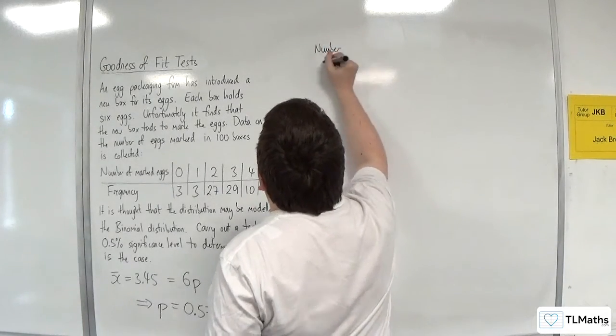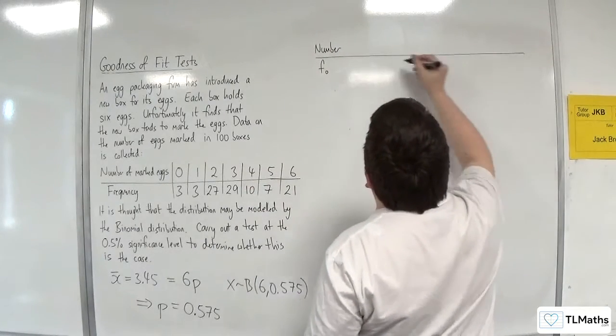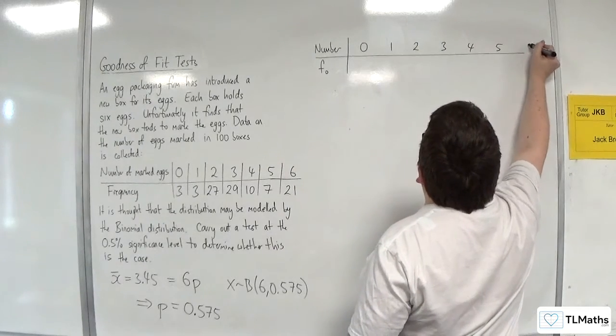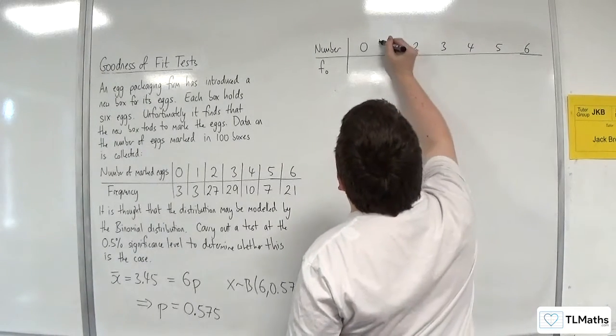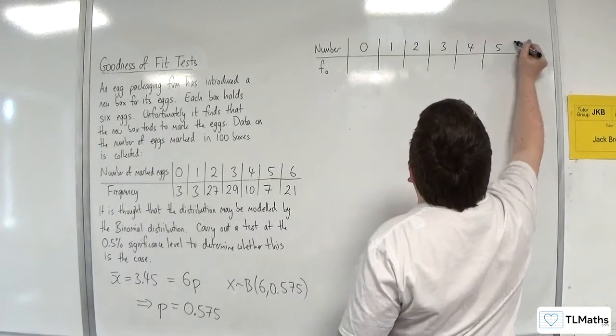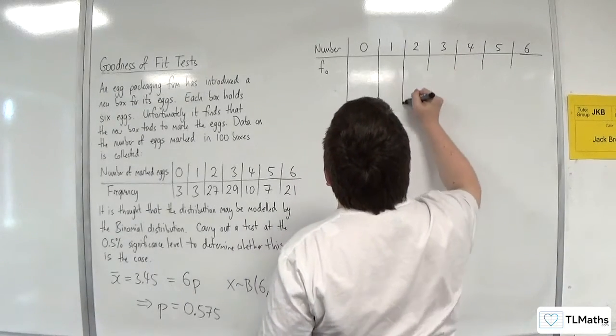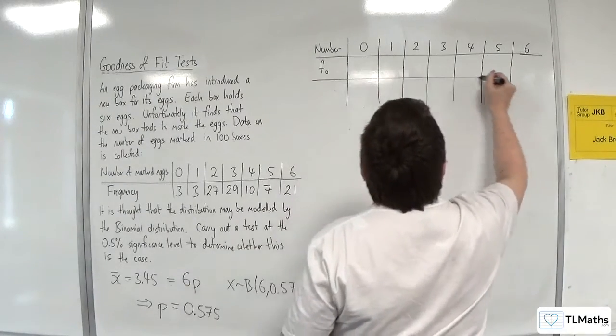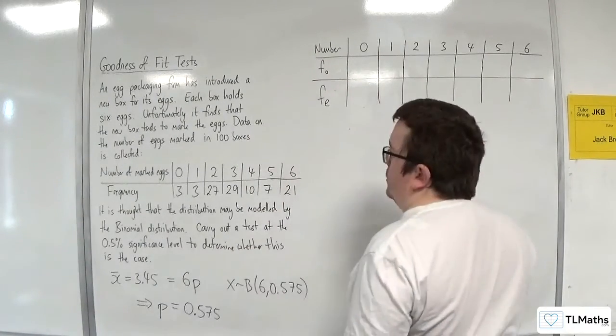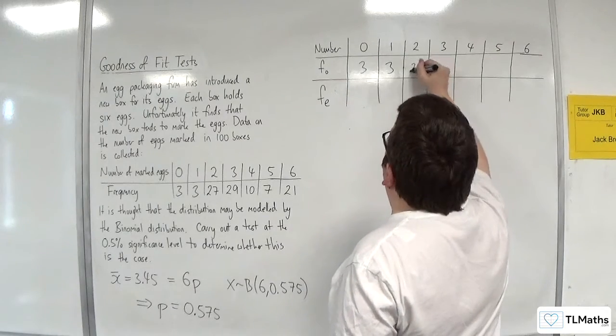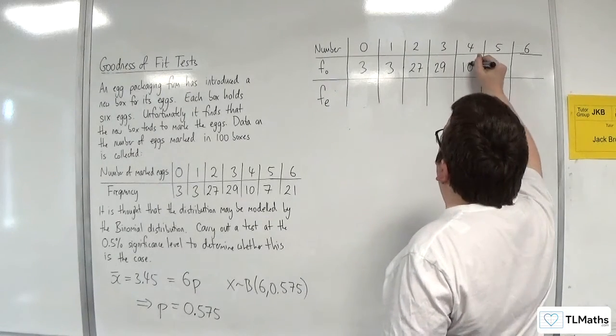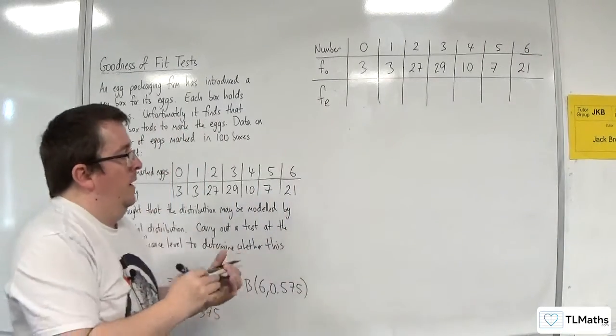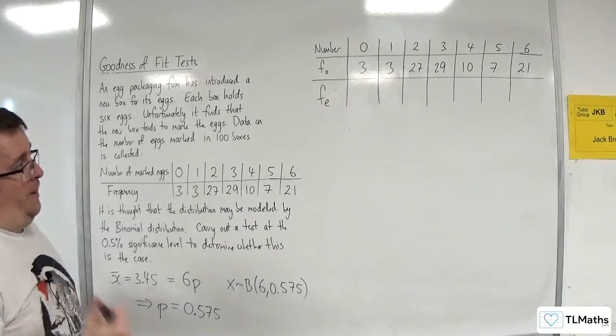Number, observed frequency: 0, 1, 2, 3, 4, 5, 6. Now, we're going to need to go a little bit further, aren't we? Because we're going to need the expected frequency. 3, 3, 27, 29, 10, 7, 21.